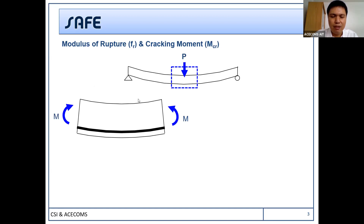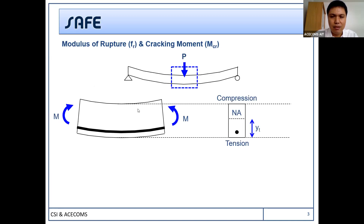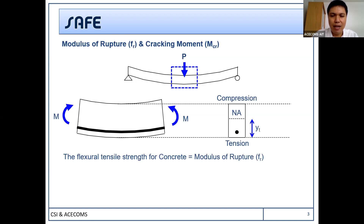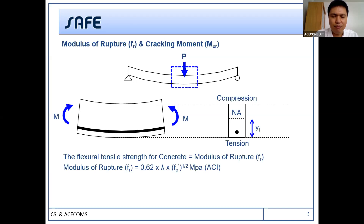When you look at the section, the top part will be in compression and the bottom part will be in tension. As you know, the tension capacity for concrete is very poor, so there are some limits of tension in concrete. We normally call this the modulus of rupture, FR. You can calculate it from the ACI recommended formula: 0.26 multiplied by lambda — lambda is the factor for lightweight concrete, which is 1 for normal weight concrete — multiplied by the square root of the concrete strength. We call the modulus of rupture the tensile strength for concrete.